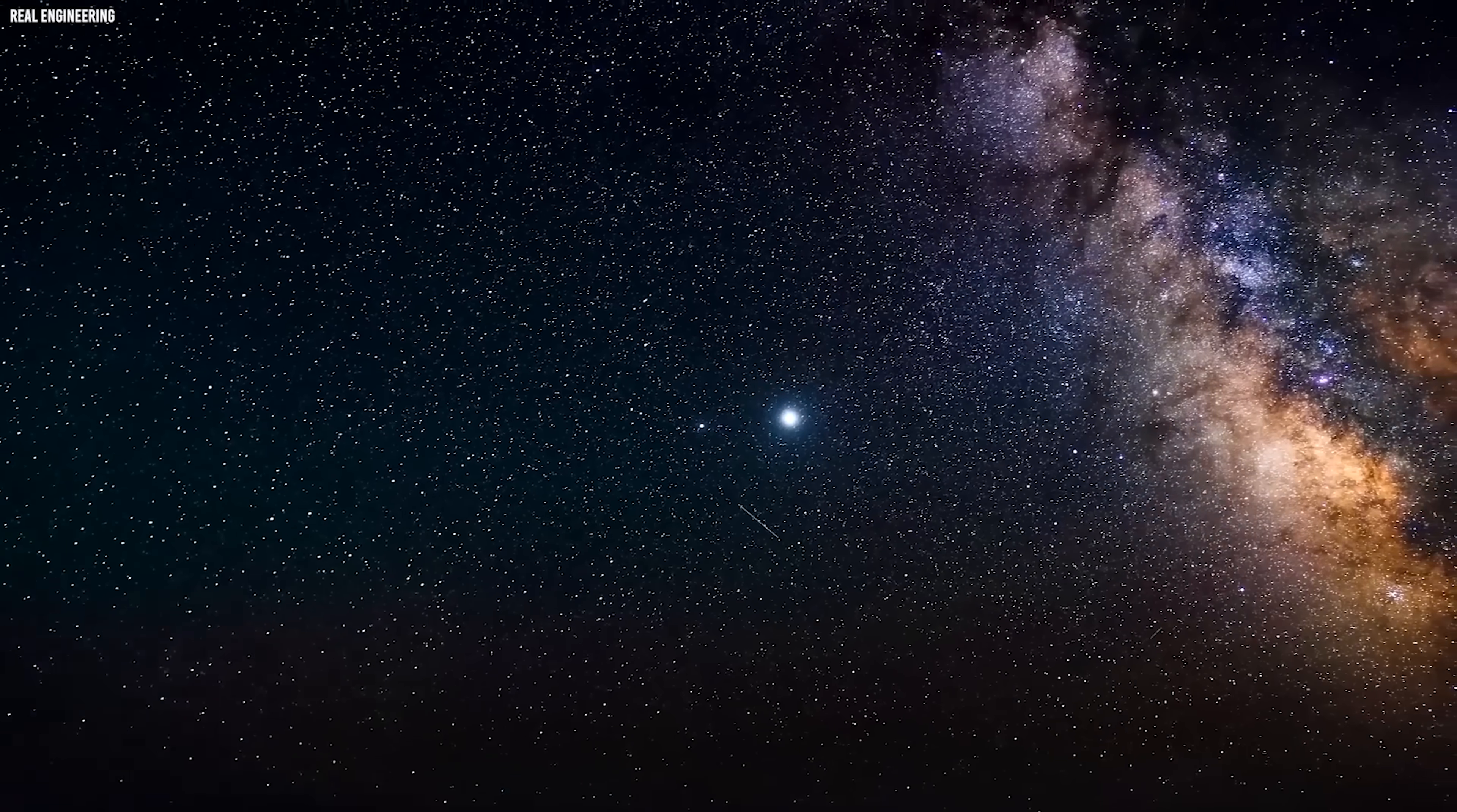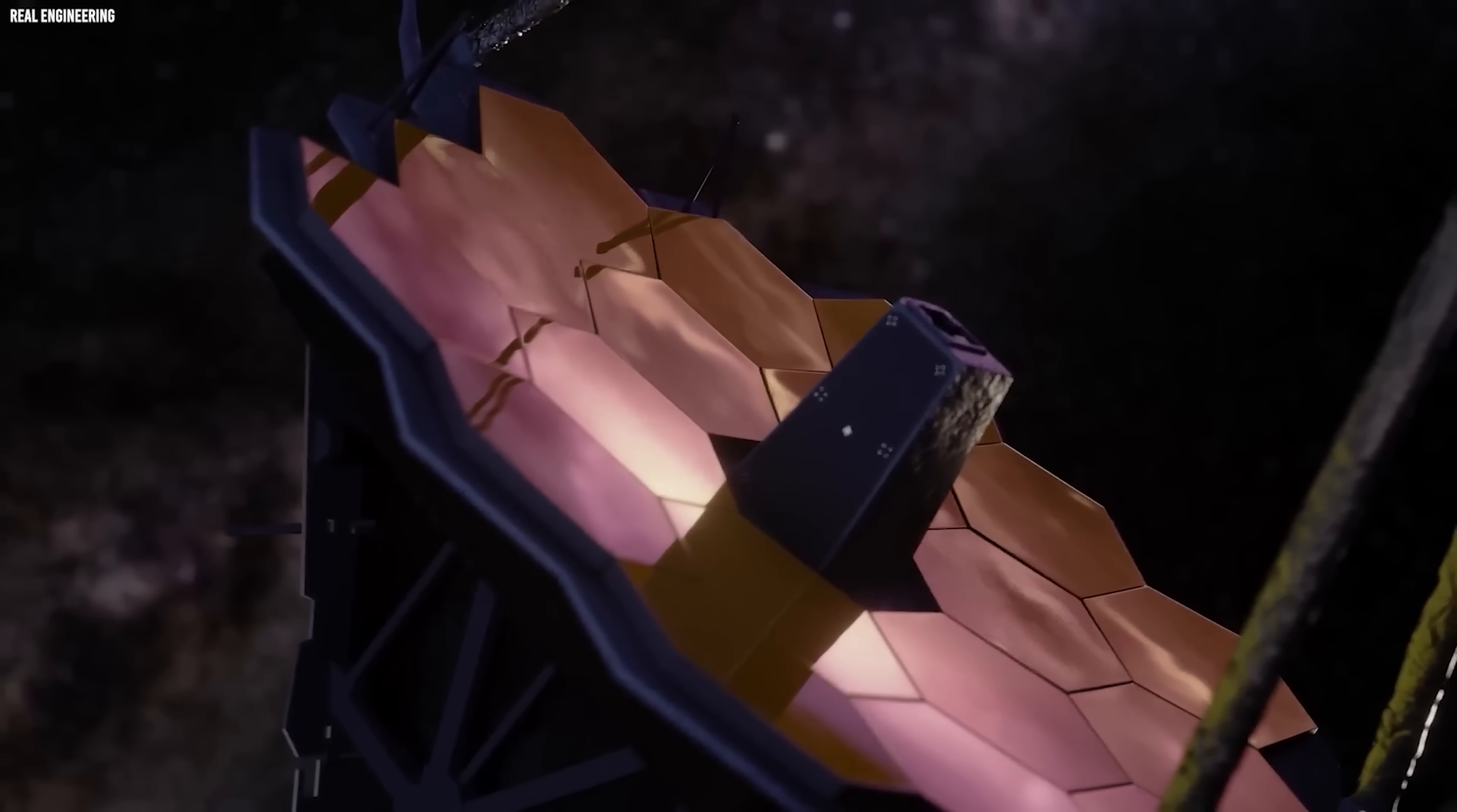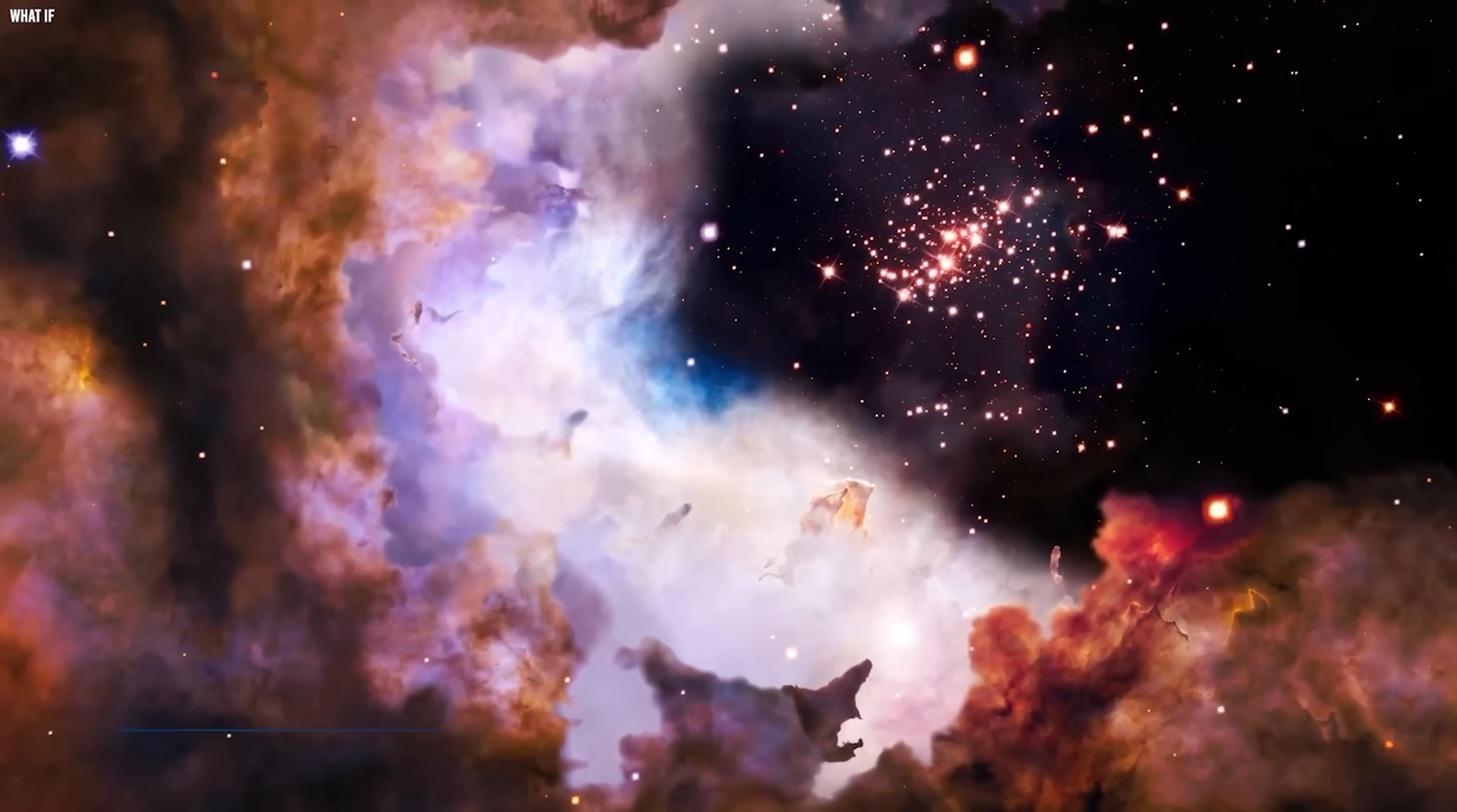Dormant ones hide. They absorb light rather than produce it. To find one this size requires extraordinary sensitivity. And Webb's instruments are the only ones in existence capable of detecting something this subtle at more than 13 billion light years away.